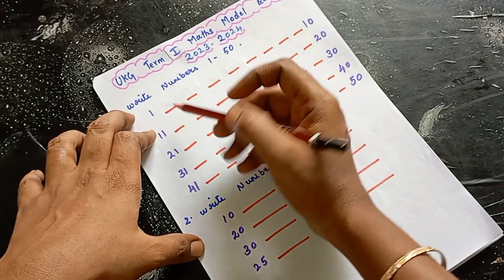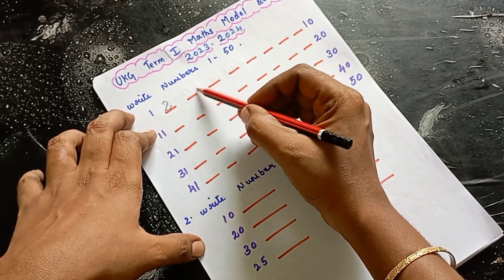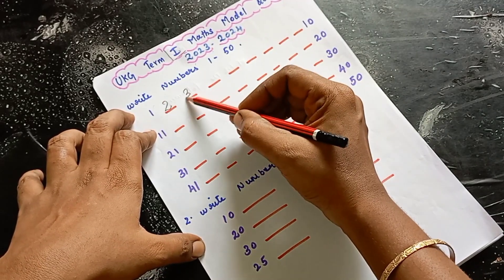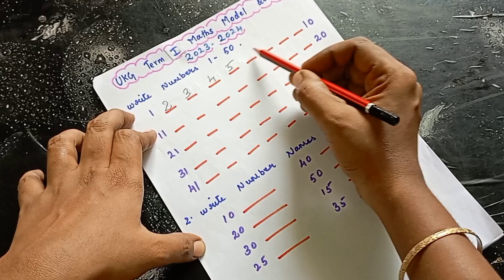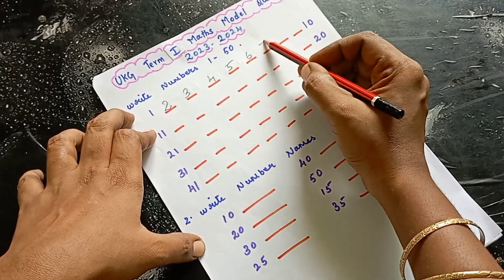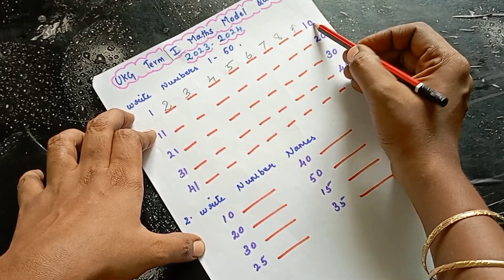First thing is 1. So 1, then comes 2, after 2 comes 3, 4, 5, 6, 7, 8, 9, 10.